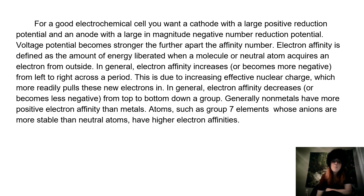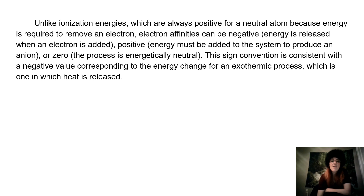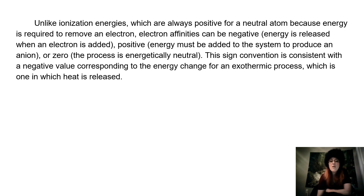Atoms such as group 7 elements, whose anions are more stable than neutral atoms, have higher electron affinities. Unlike ionization energies, which are always positive for a neutral atom because energy is required to remove an electron, electron affinities can be negative — energy is released when an electron is added — positive, where energy must be added to the system to produce an anion, or zero, where the process is energetically neutral. This sign convention is consistent with a negative value corresponding to the energy change for an exothermic process, which is one in which heat is released.